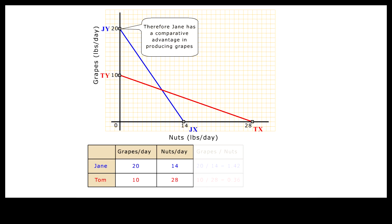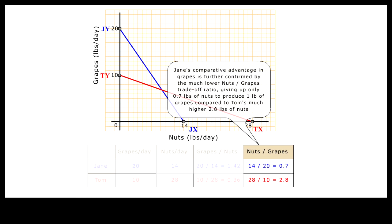We can also confirm that Jane has a comparative advantage in producing grapes by computing the nuts-to-grapes trade-off ratios for Jane and Tom. To do this, we simply divide the maximum nuts output by the maximum grapes output for each worker. For Jane, she has to give up 0.7 units of nuts for each unit of grapes, while Tom has to give up 2.8 units of nuts for each unit of grapes — that is 4 times as high as Jane.